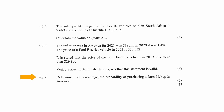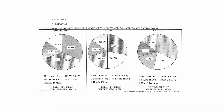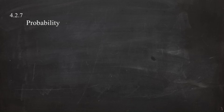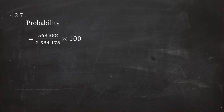In question 4.2.7, you are instructed to determine as a percentage the probability of purchasing a Ram pickup truck in America. From the pie chart, the number of Ram pickups sold in 2021 was 569,388, and the total vehicles sold in America was 2,584,176. The probability equals 569,388 divided by 2,584,176 multiplied by 100, which gives a probability of 22.03%.